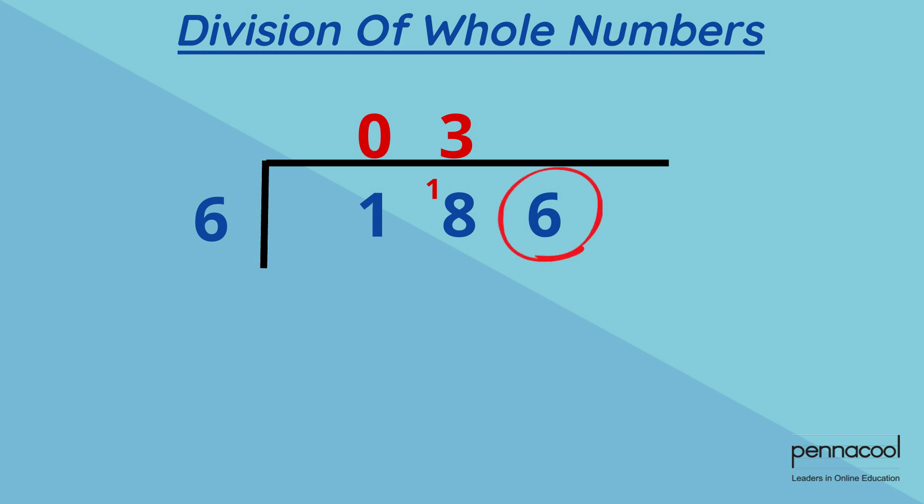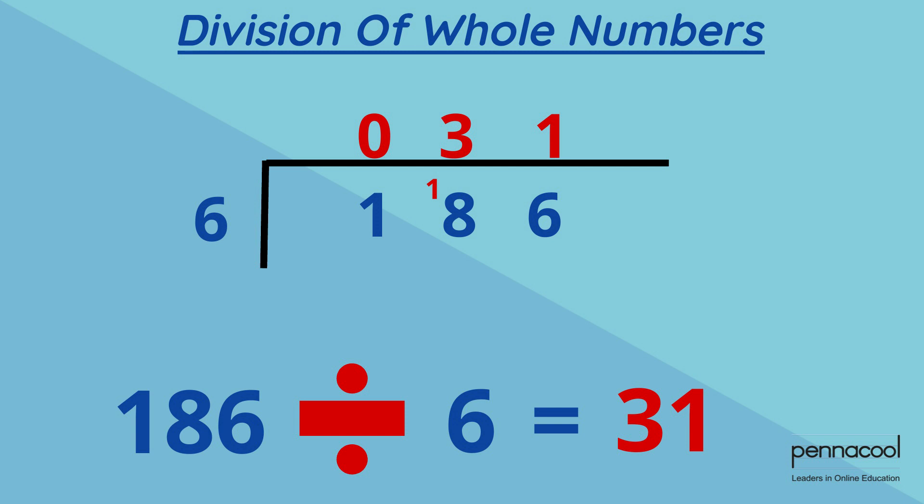And lastly, 6 divided by 6 is 1 with no remainders. 1 goes into our last space in the answer. 186 divided by 6 is equal to 31.